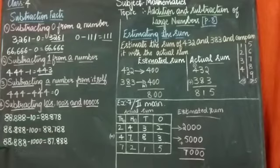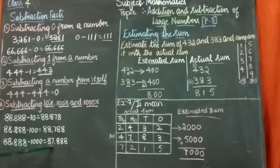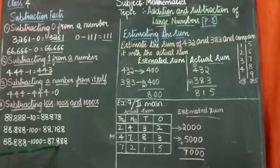Thousands also. 88,888 minus 1000. Observe the thousands digit again here. The thousands digit will be changed in the difference answer. That is 87,888.